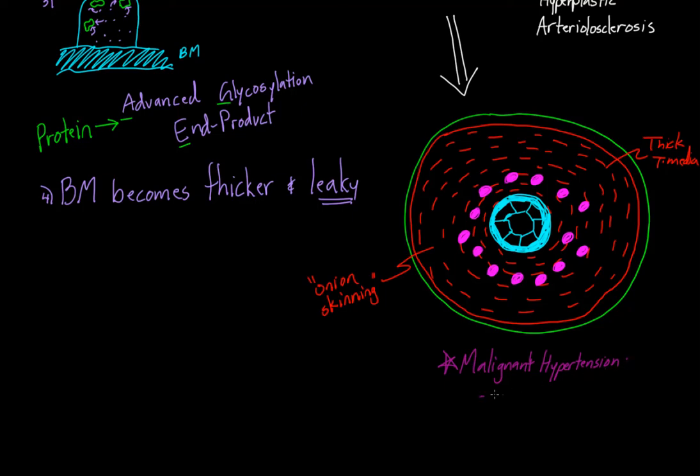Malignant hypertension, just to remind you, is when you have a rapid rise in blood pressure. It can go as high as 240 over 120, really, really high.